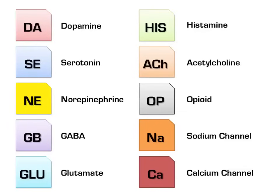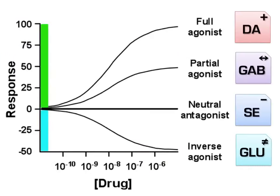The presentation will use a key for neurotransmitters. In addition, a drug's effects on each neurotransmitter will be noted with a plus sign for agonists, a double-headed arrow for partial agonists, a minus sign for antagonists, and an unequal sign for inverse agonists. As a quick review: a full agonist mimics the effect of a neurotransmitter; a partial agonist mimics it but only to a certain lower point; an antagonist blocks the effect of a neurotransmitter; and an inverse agonist produces an opposite effect to the neurotransmitter.